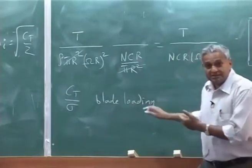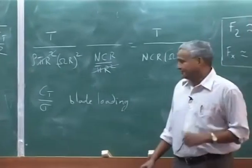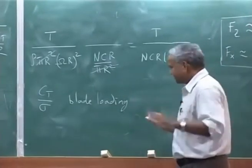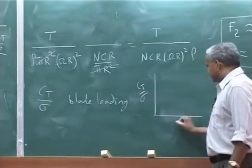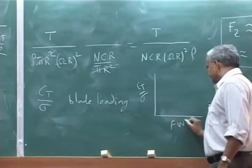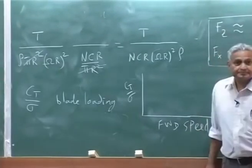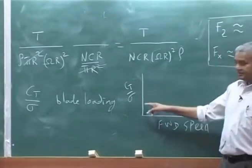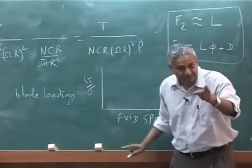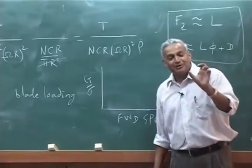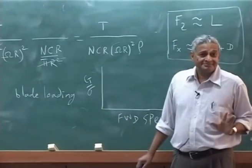But normally using this quantity, you define a limit with respect to - I will just draw the diagram, but I will not. CT over sigma, this is speed, forward speed. However, I know how much this quantity in hover. You can go for a given rotor, please understand. This is drawn for a given rotor. Given rotor means sigma is fixed, right. These quantities are fixed.